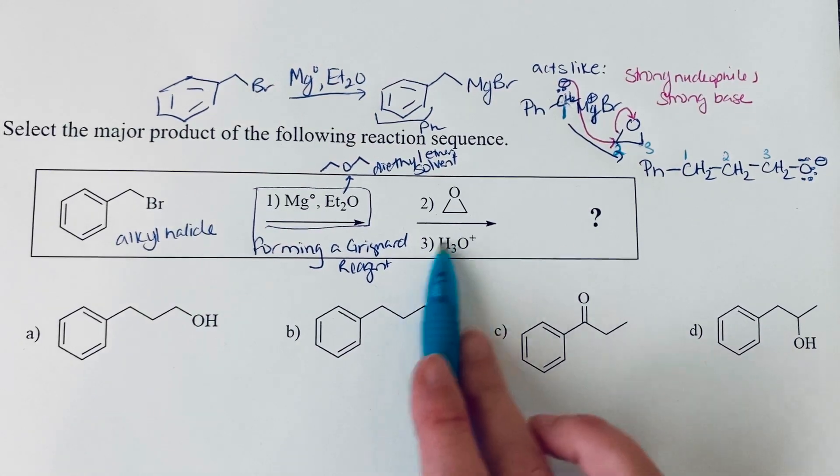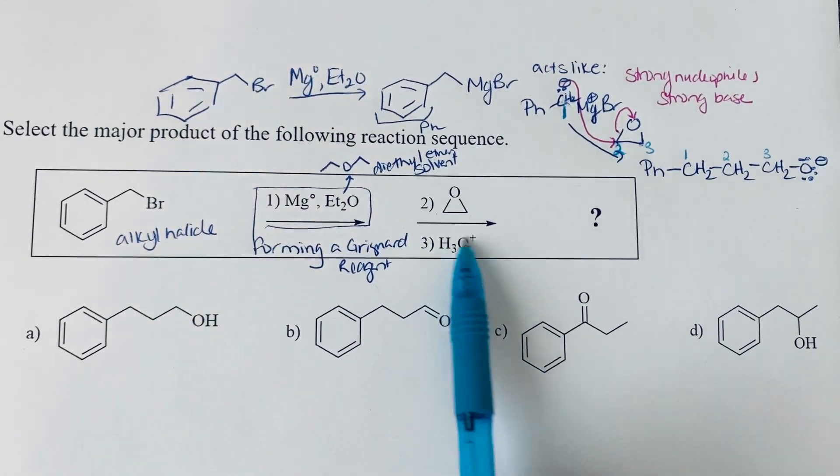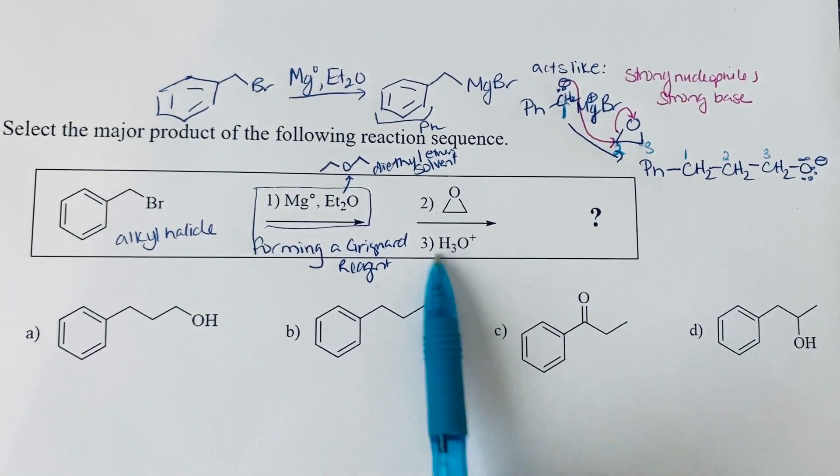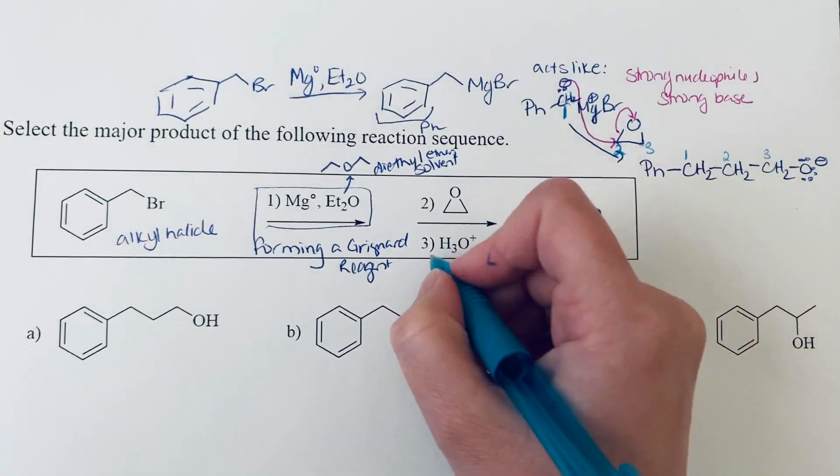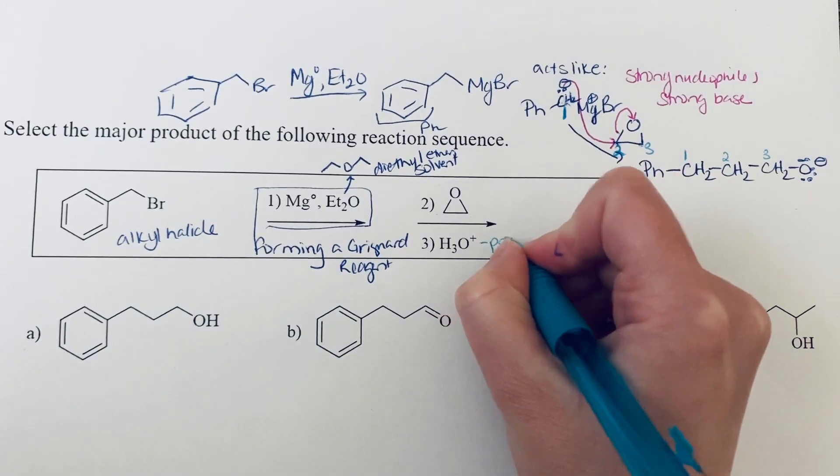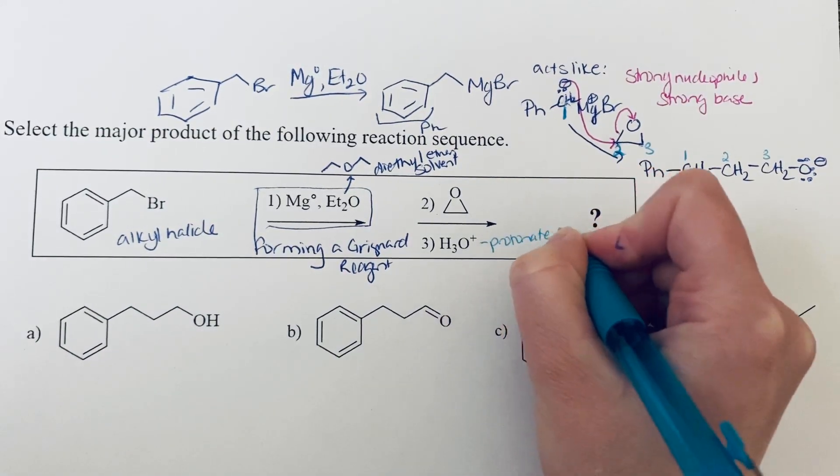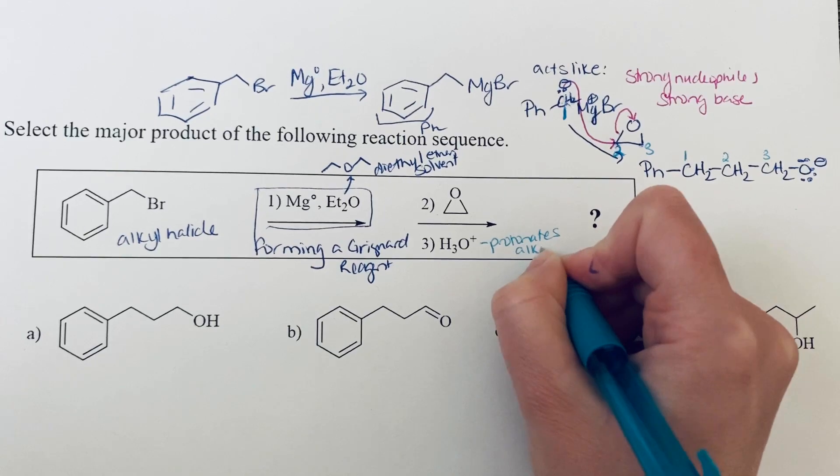And what we have here is a workup step with aqueous acid. So you'll often see this with either water or H3O+, but the role is to protonate the alkoxide. So this will protonate the alkoxide ion.